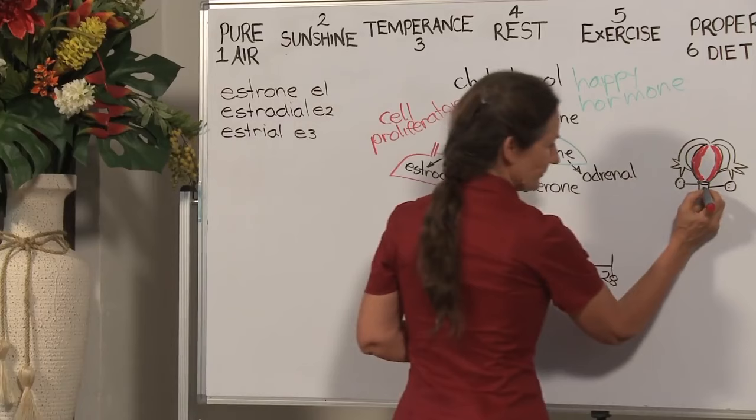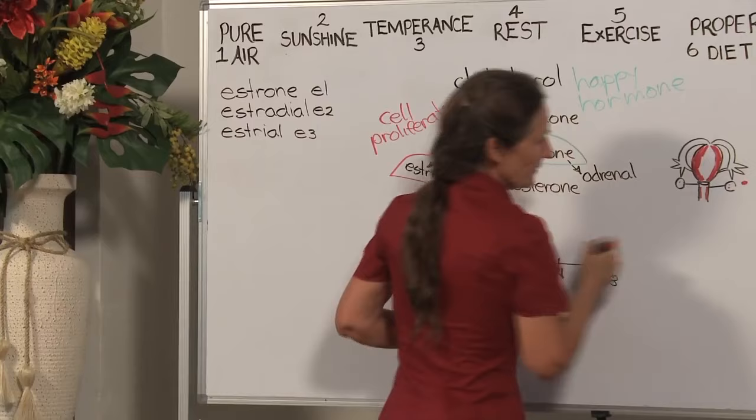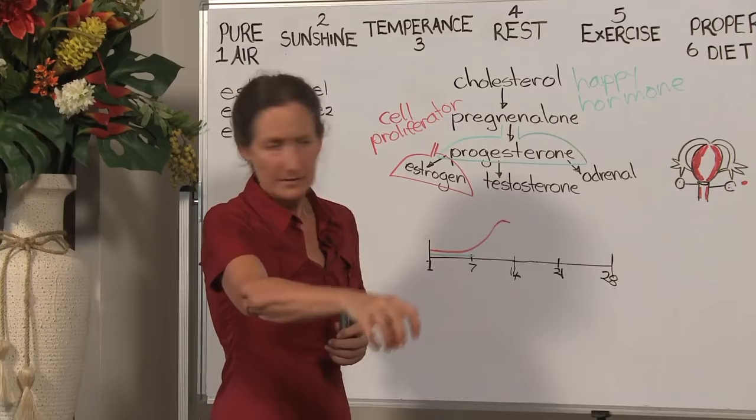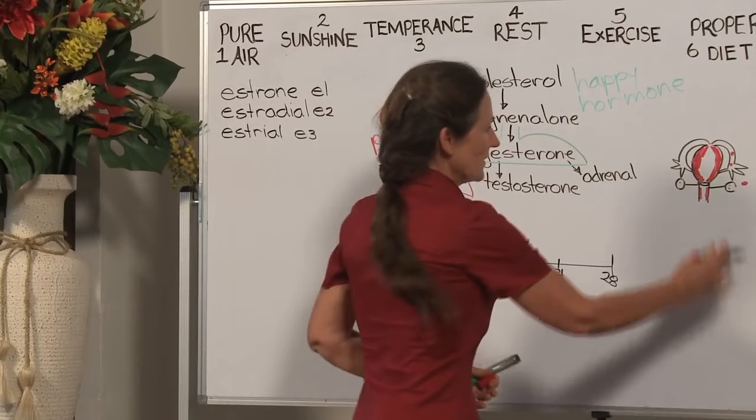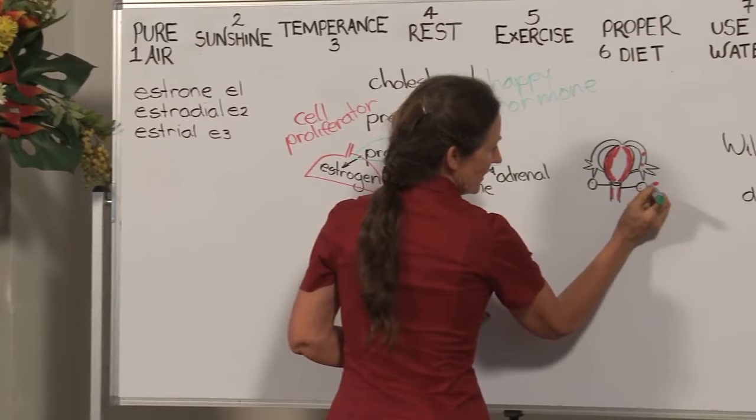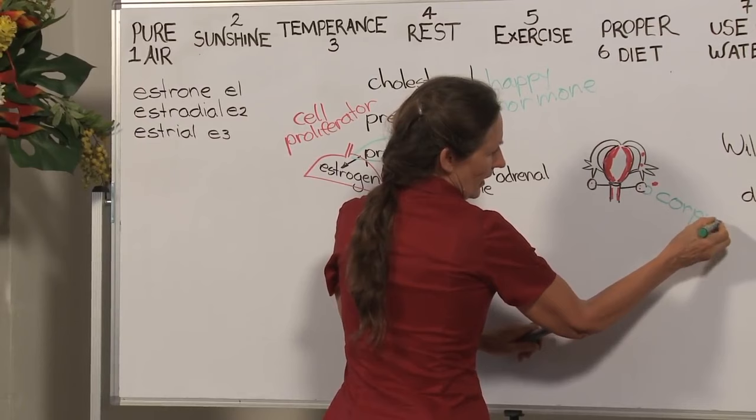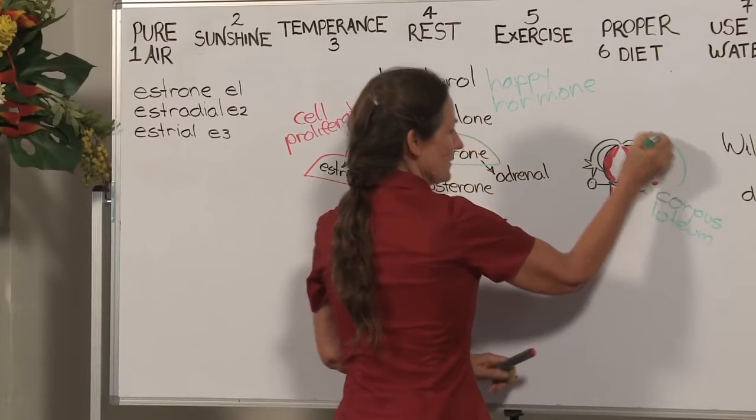By day 14, a fully developed egg bursts forth from the ovary. The little filaments on the end of the fallopian tube grab that little egg and pull it up into the fallopian tubes. The fallopian tubes are ever moving forward, causing that egg to move up. The hole where the egg bursts forth develops a blister, and that blister is called the corpus luteum.